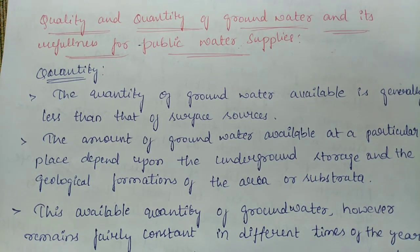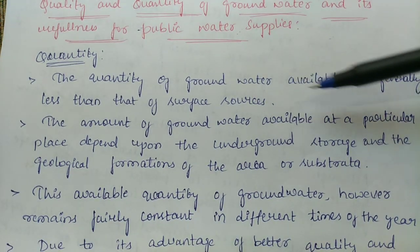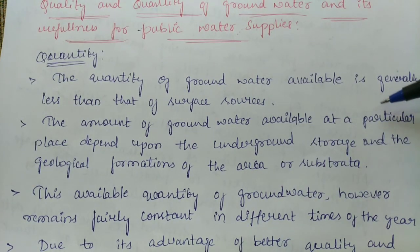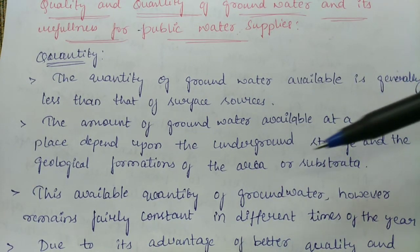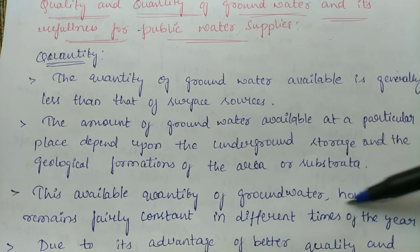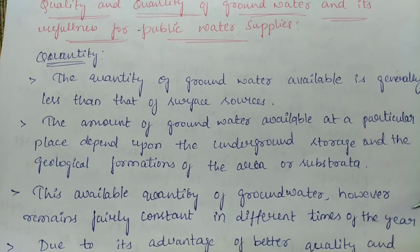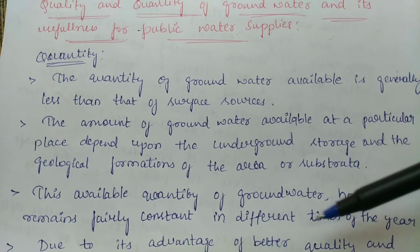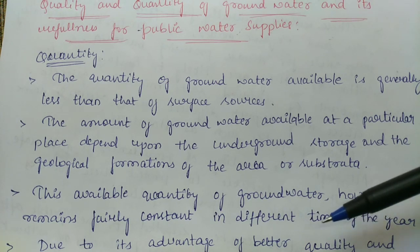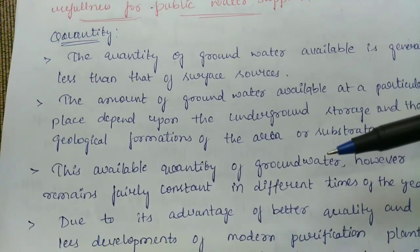When discussing the quantity of groundwater, it is generally less than that of surface supply sources. The amount of groundwater available at a particular place depends upon underground storage and the geological formations of the area and the substrata. The available quantity of groundwater remains fairly constant at different times of the year. This works as a backup but not as a primary source of supply, since not all people can access groundwater.